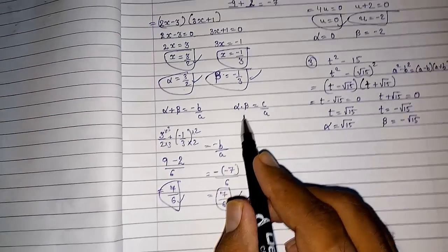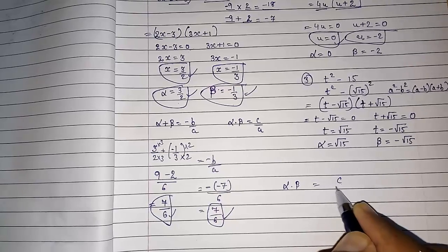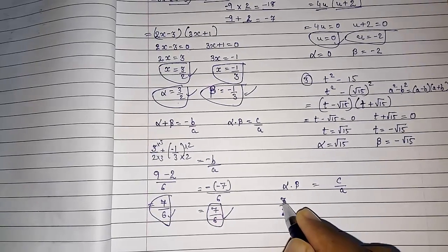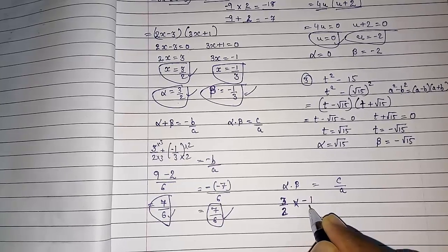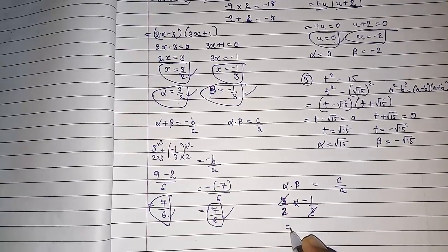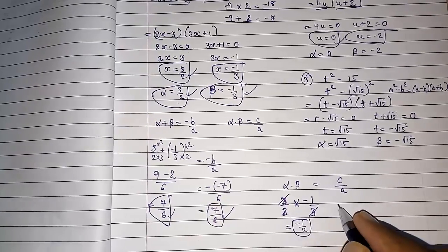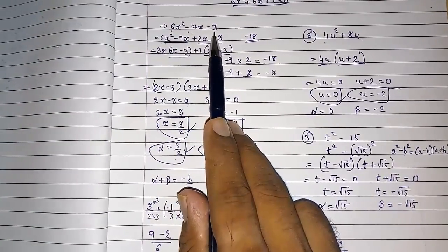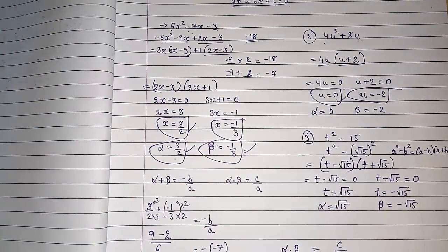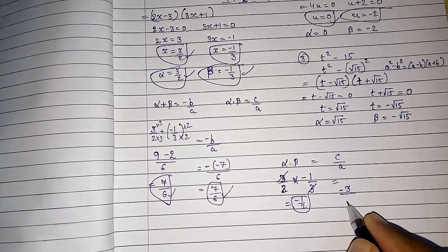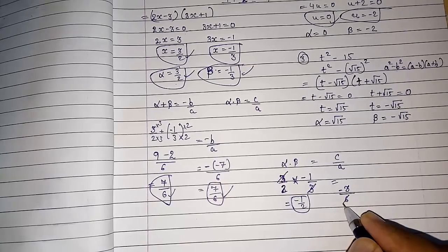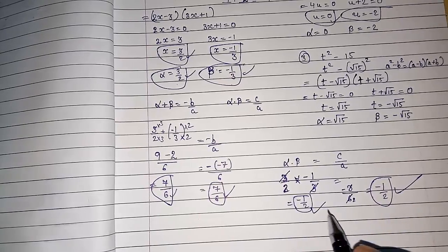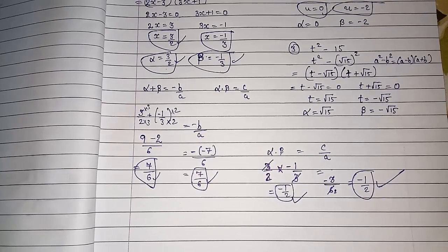Now we verify α × β = c/a. α × β = (3/2) × (-1/3) = -1/2, since the 3s cancel. On the other side, c/a = (-3)/6 = -1/2. Both answers are the same. This is how we verify the relationship between the zeros and the coefficients of the polynomial.